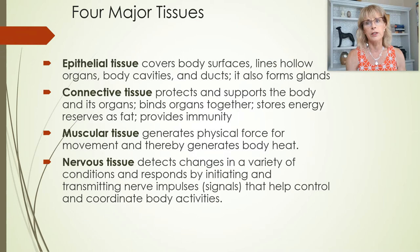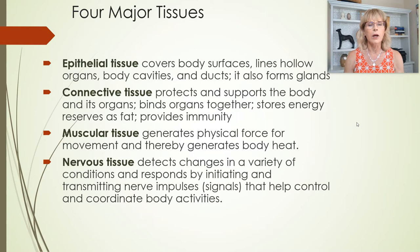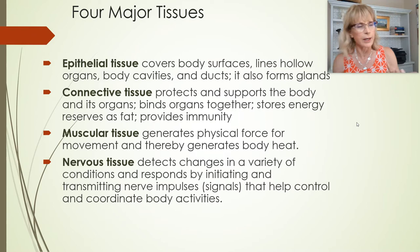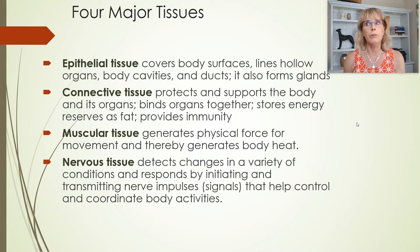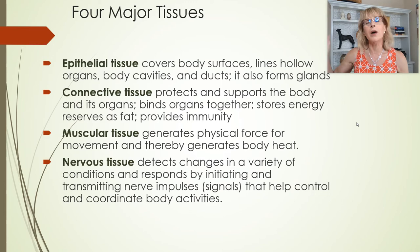One helpful approach as you're learning the tissues is to think not just about the details of what they are, but why that is useful. For example, you usually don't build a bathroom door out of glass because it's see-through. You might make a door soundproof if it leads to a sound studio. These tissue types are like those different materials chosen for specific functional reasons.